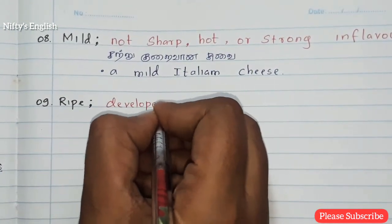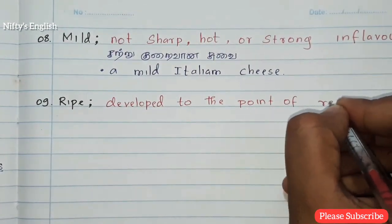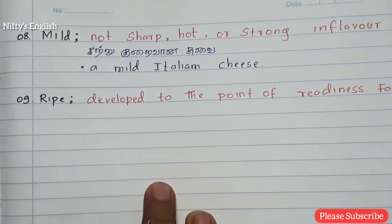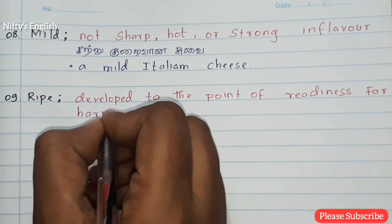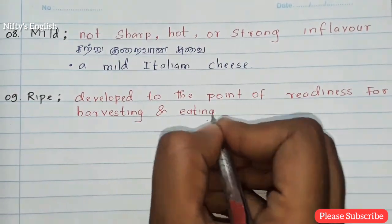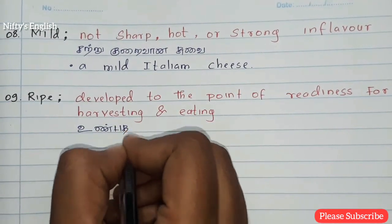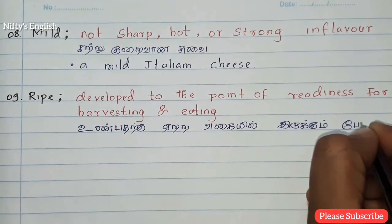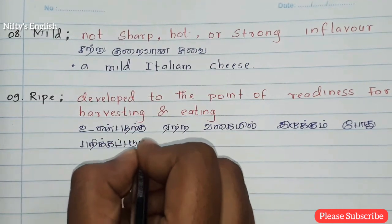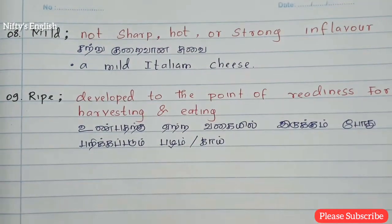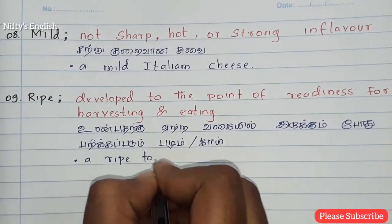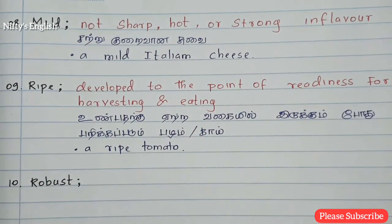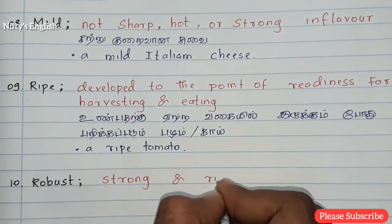The ninth one is ripe — developed to the point of readiness for harvesting and eating. For example: a ripe tomato.